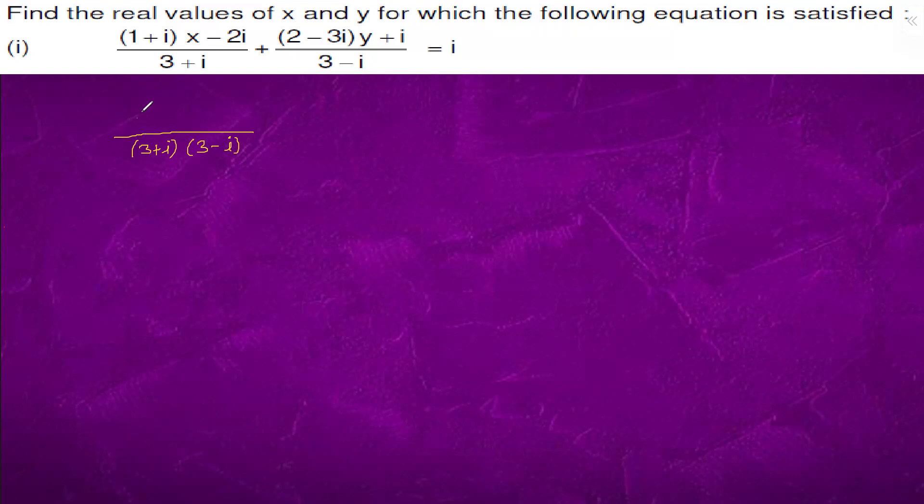And here we have 1 plus iota x minus 2 iota. We will have to multiply this with 3 minus iota. We will multiply with the conjugate, so this is 3 minus iota into 3 plus iota.